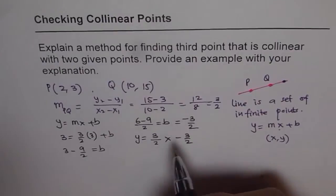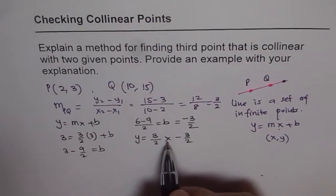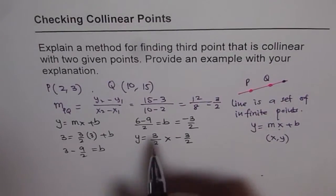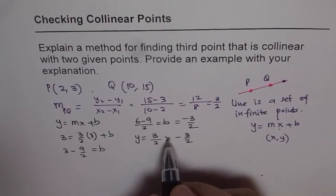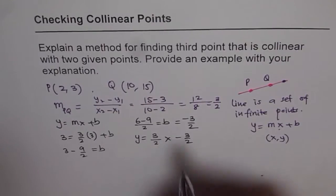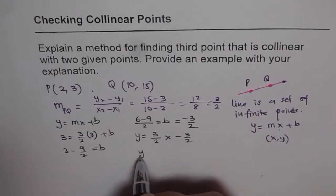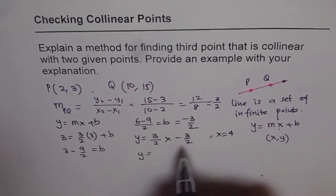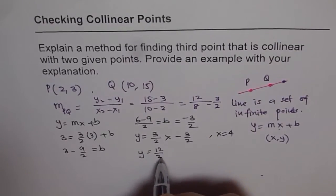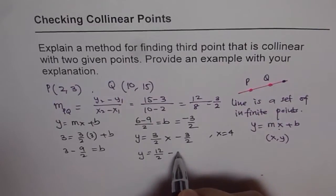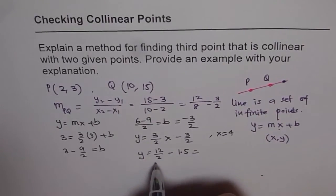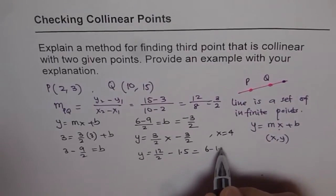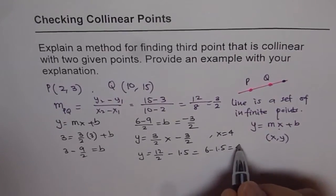Now if you have to find any other point on this line, I can substitute some value for X. So let's use X as 4 for example. If I use 4 here, then what do I get? We get Y equals, I am using X equals 4. So we get 4 times 3 is 12. So 12 over 2 minus 3 by 2 is 1.5. We get 6 minus 1.5 and that gives us a value 4.5.